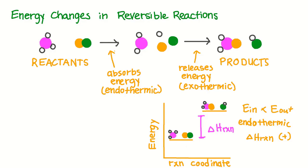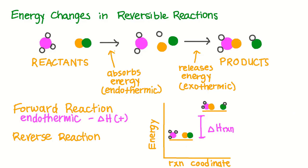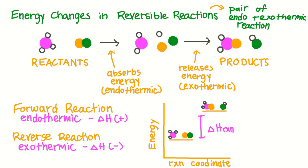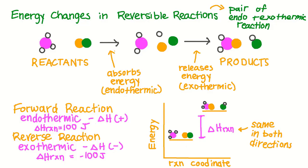What does this mean for reversible reactions? Well, let's say that our forward reaction is endothermic, so the reaction would have a positive change in enthalpy. When we look at our diagram, we can see that when we go from reactants to products, the reaction is endothermic because we have a positive change in enthalpy. But when we go the other way, forming the reactants from the products, the enthalpy change is negative, meaning that the reaction would be exothermic. This will always be true for reversible reactions: in one direction the reaction will be endothermic, and in the other direction the reaction will be exothermic. However, when we look at the overall change in enthalpy for the reaction, that will be the same — only the sign will be different. In other words, if in the forward direction the enthalpy change is 100 joules, the enthalpy change will be equal to negative 100 joules in the reverse direction.